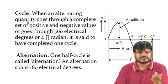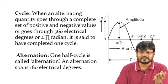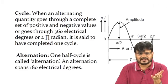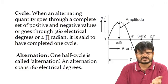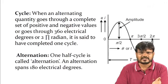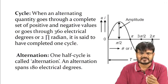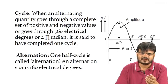A cycle is the complete set of positive and negative values, going through 360 degrees electrical — or 2π radians. When an alternating quantity completes this, it is said to have completed one cycle. One half cycle is called an alternation. So the positive half from 0 to π is one alternation, and the negative half from π to 2π is another alternation.